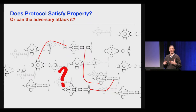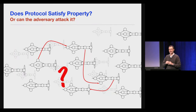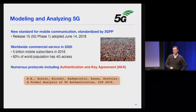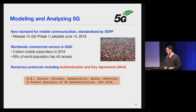At the end of the day, Tamarin takes the specifications of the role automata, the adversary, and the security properties, and uses constraint solving algorithms to determine if the protocol automata can be run together with the adversary to produce an attack. If not, we have a proof that no possible attack can exist. Now let's move from Tamarin to analyzing 5G.